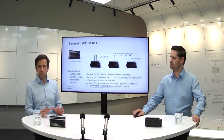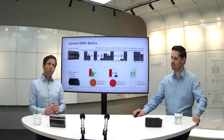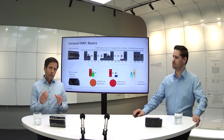Looking at the DMX signal itself — there are up to 512 values sent 33 times per second at quite a fast pace. Every channel can have a value between 0 and 100% (or 0 to 255). Those values don't inherently mean anything — they can represent anything. How they're interpreted comes from the driver. For example, a driver controlling RGB most likely uses a footprint of three channels — one for red, one for green, one for blue — and has a start address to know where in the DMX channel chain to look.